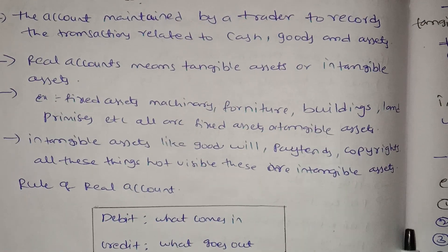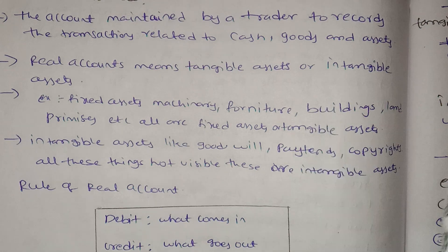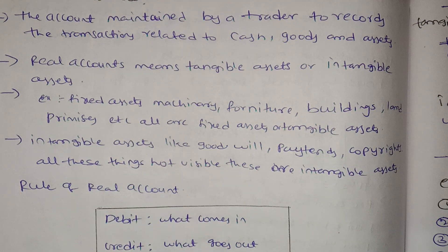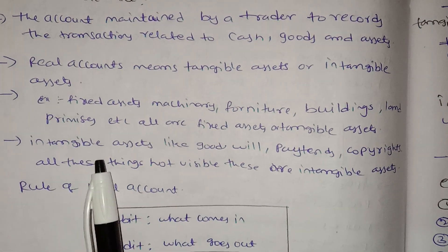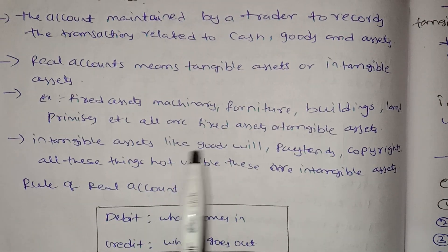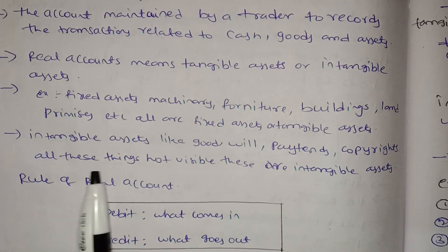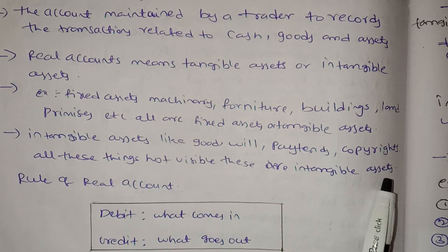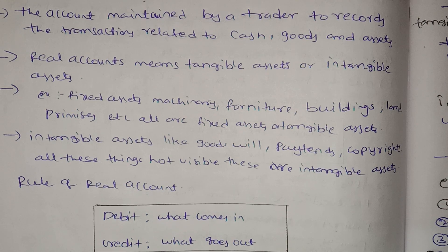Tangible assets are physical — you can touch and see them. Intangible assets like goodwill, patents, and copyrights are not visible. They are not something we can touch. These are the two types under real accounts.